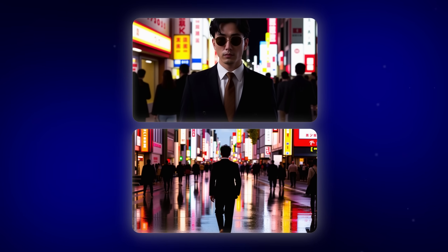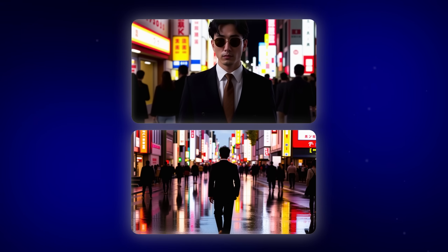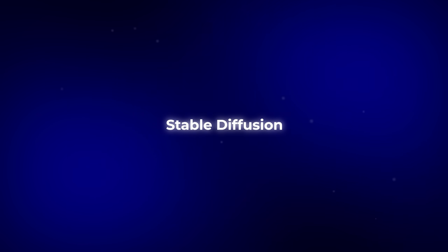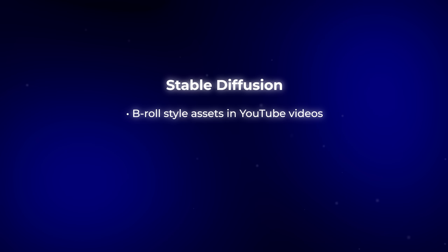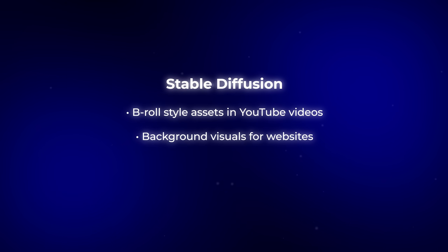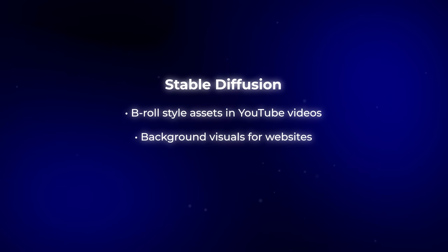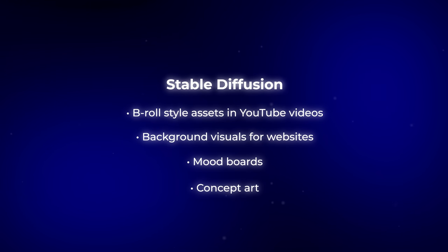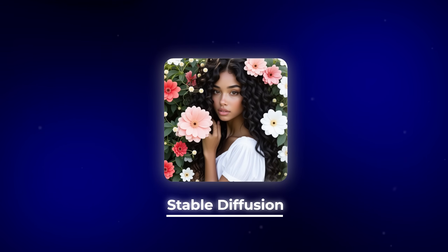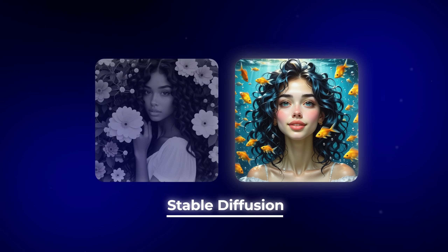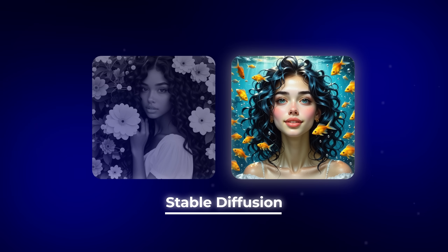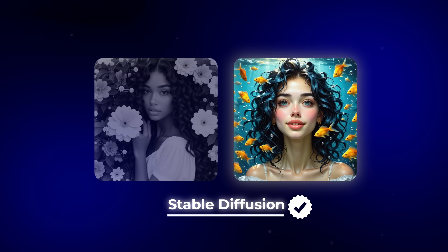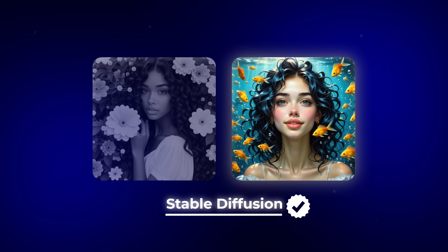A man in a suit walking in Tokyo at night with neon reflections — that high-fashion editorial look felt consistent across all of them. These images don't feel like rigid stock photos, and that's where this model shines. I could easily see using Stable Diffusion for B-roll style assets in YouTube videos, background visuals for websites, or as a creative partner for mood boards or concept art. So while it's not the go-to for perfect photorealism, if your goal is creativity, stylization, and a touch of that drawn or designed feel, Stable Diffusion is absolutely worth keeping in your toolkit.